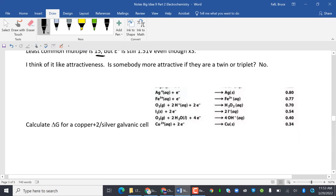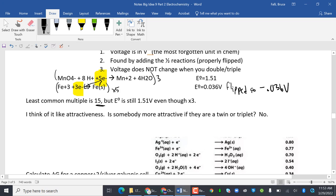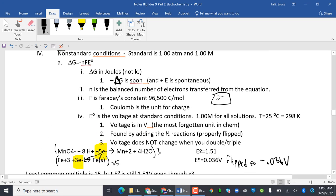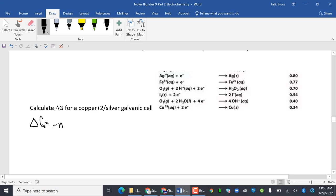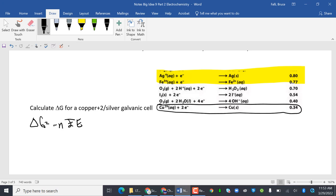Calculate delta G for a copper plus two galvanic cell. Let's look at our equation again. Delta G equals negative NFE. So that means we're going to have to figure out what the E is going to be from here. Silver and copper two. Notice how these are both reductions, so I have to flip one of them. I have to flip it so that I still have a positive value. So I'm going to flip the bottom one.